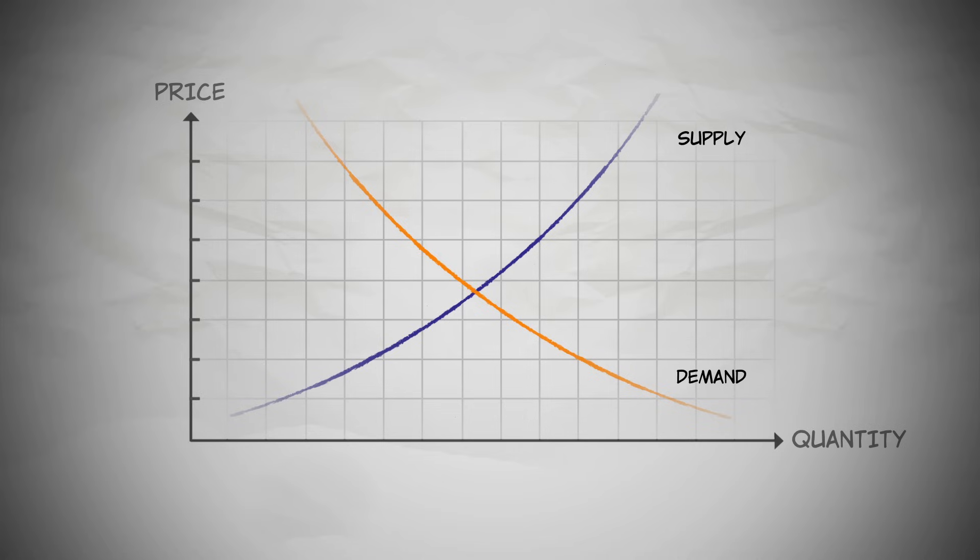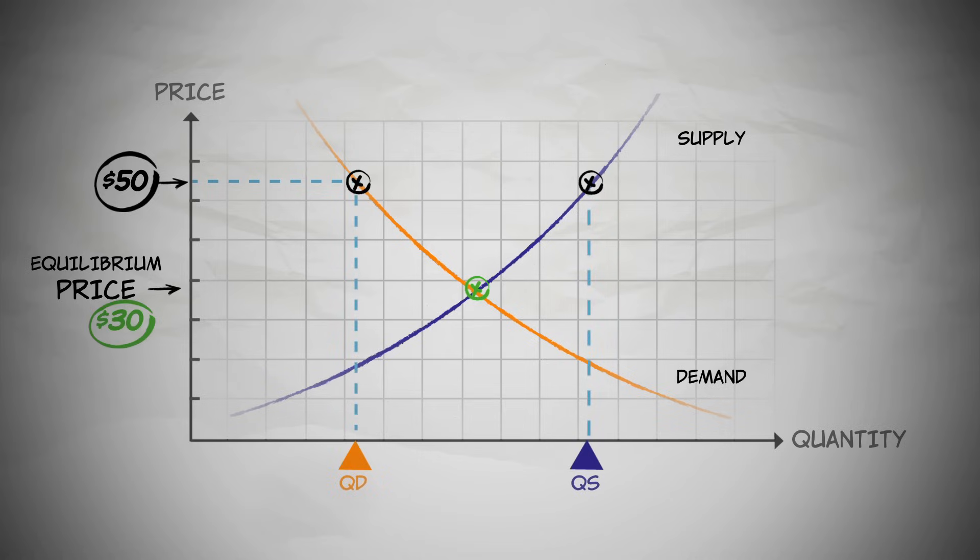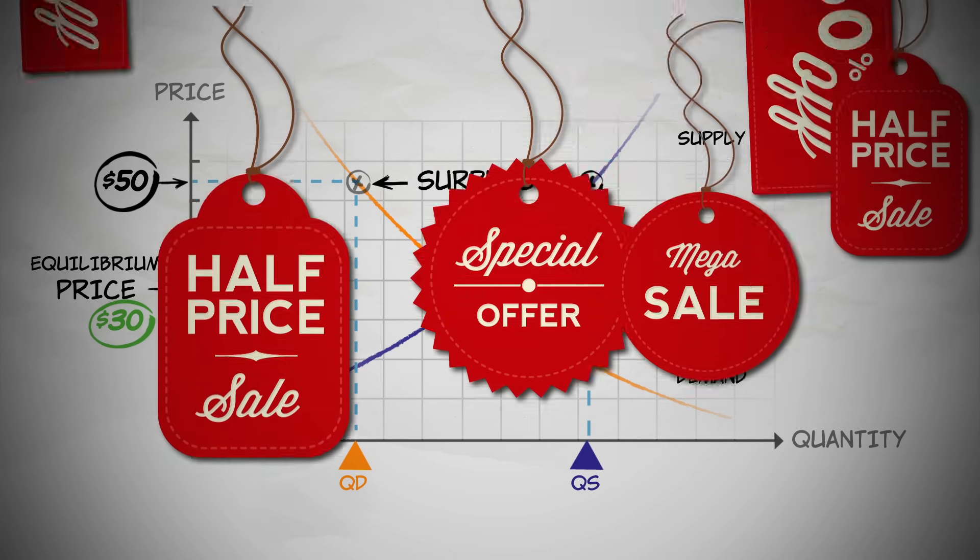So, let's say the price of oil is currently $50 a barrel. That's above the equilibrium price of $30 a barrel. At $50 a barrel, the quantity supplied is more than the quantity demanded. So, we say there is a surplus. What happens? It's sale time!